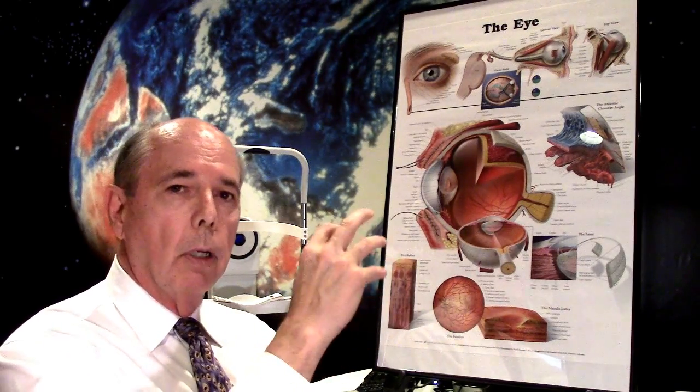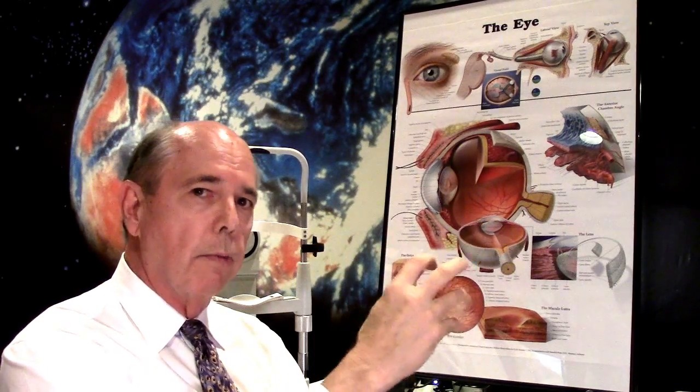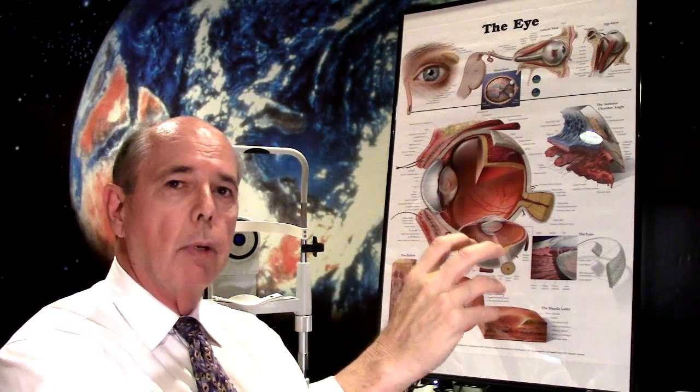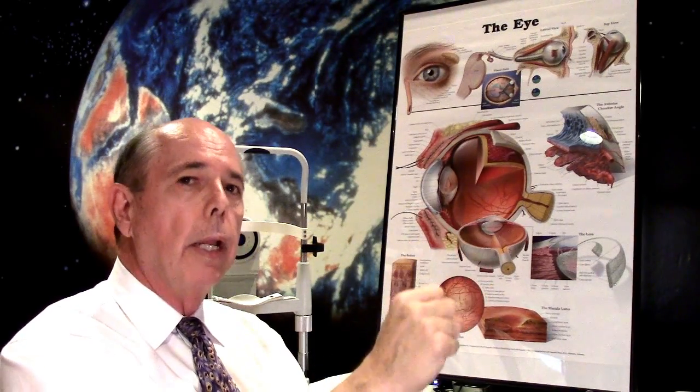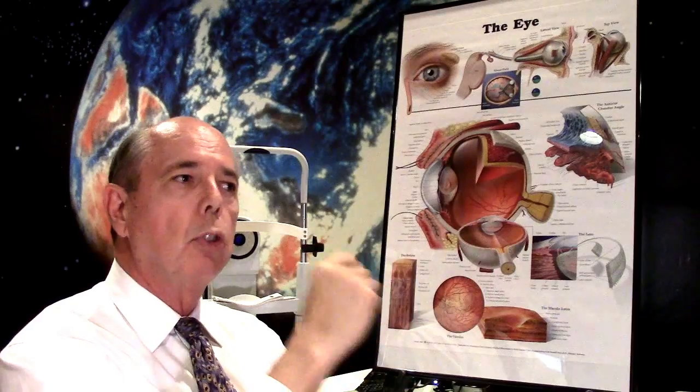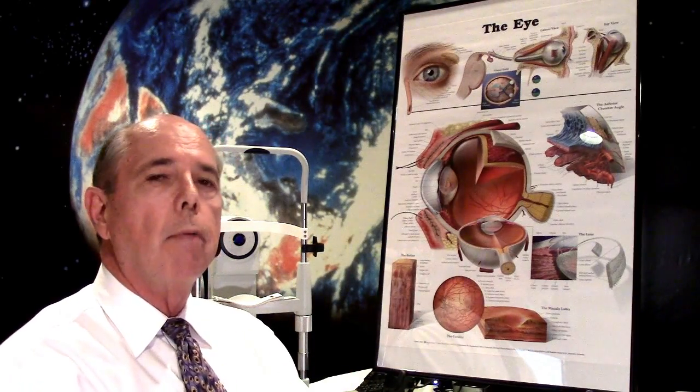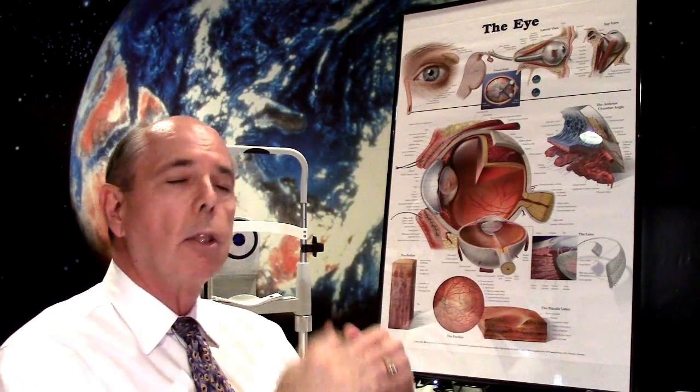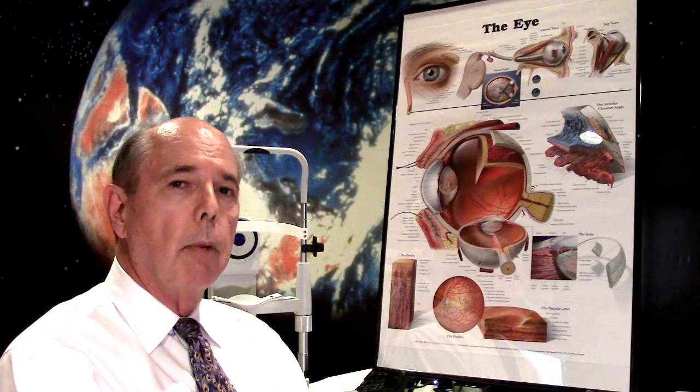So you have goblet cells on the surface of your eye that produce the bottom mucus layer, the lacrimal gland produces the water layer, and then the meibomian glands produce the oily layer of your tear film. You have to have all three of those layers in the right proportions for your tear film to be stable.